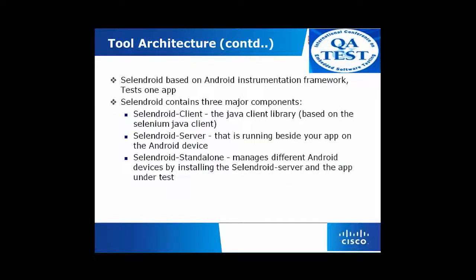Continuing with the tool architecture: it is based on the Android instrumentation framework and tests one app at a time. This contains three major components — Cylindroid client, Cylindroid server, and Cylindroid standalone. The client is where we have the Java client library, primarily based on the Selenium Java client used for web-based testing. We have a Cylindroid server running right next to the app under test on the Android device or emulator, and a Cylindroid standalone server which manages different devices by installing the Cylindroid server and the app under test.